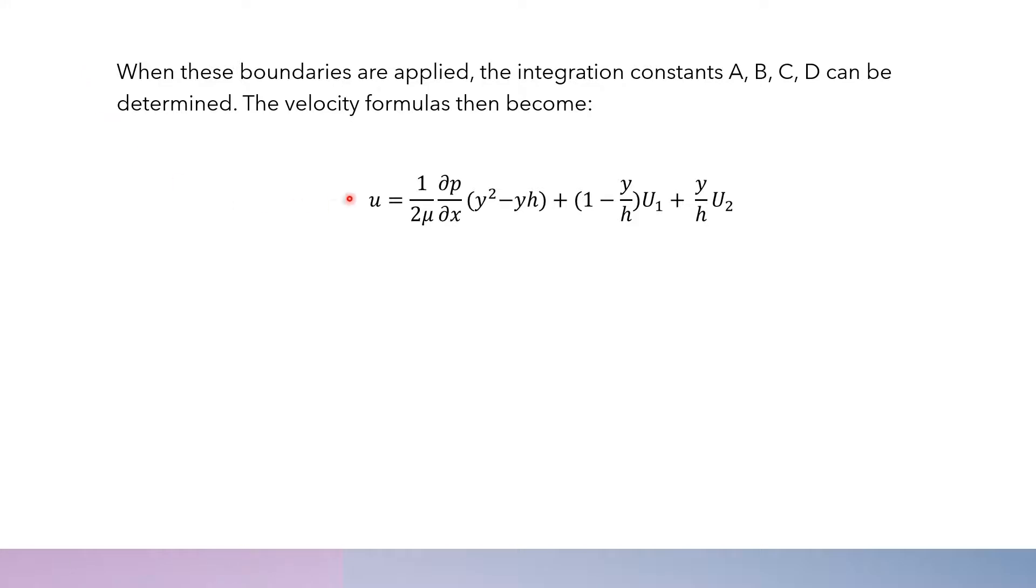First, we have U equals 1 over 2μ multiplied by ∂P/∂X multiplied by Y² minus YH.